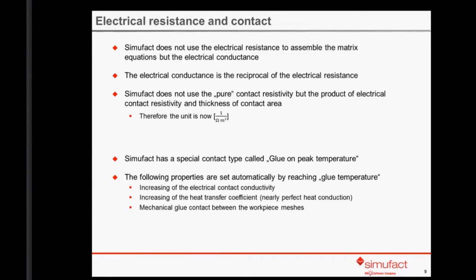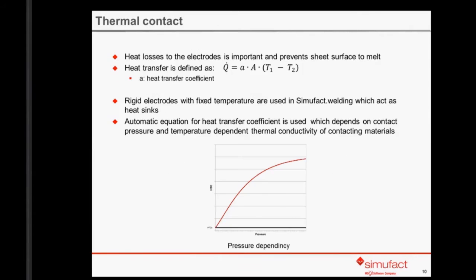How do we model the heat losses to the electrodes? This is an important influence because it can prevent the sheet surface from melting. The heat transfer is defined using the heat transfer coefficient parameter 'a'. In SimuFact Welding, we use rigid electrodes with a fixed temperature. These electrodes act like heat sinks in the model and can transport heat out of the sheets. The heat transfer between electrode and sheet is determined using an automatic equation, which depends on contact pressure and the thermal conductivity of the sheet and electrode material.